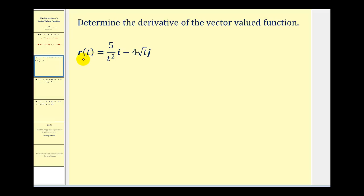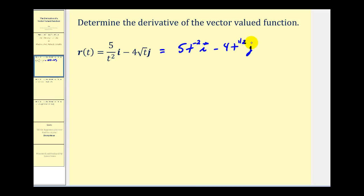To find the derivative of this vector-valued function, the first thing we need to do is rewrite the functions in terms of t in a form that we can easily apply the power rule. We're going to rewrite this as 5t to the negative 2 times the unit vector i, minus 4t to the power of one half times the unit vector j.